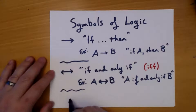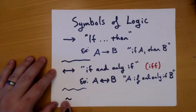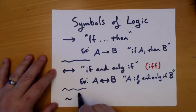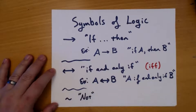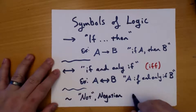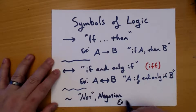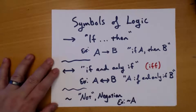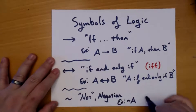The third one — there are six total — looks like a little squiggly negative sign, and this means 'not.' It's the negation. For example, if I wrote the squiggly sign followed by A, that would mean 'not A.'